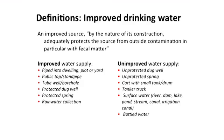Before showing the coverage statistics, let's look at the definitions for improved water sources and improved sanitation services. For water, an improved source includes piped water into a dwelling or a plot, public taps or stand posts, tube wells or boreholes, and some kind of intervention where water quality has been improved.